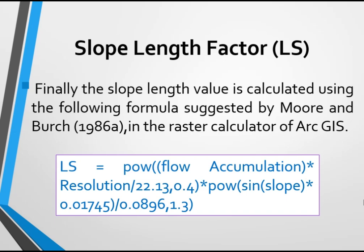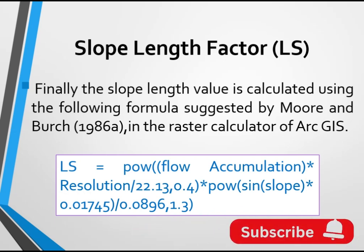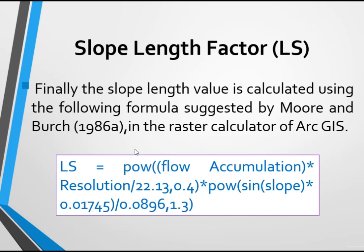Based on the suggestion of Moore and Burch (1986), the slope length factor LS is given by: (flow accumulation × cell size / 22.13) raised to the power of 0.4, multiplied by (sine of slope / 0.0896) raised to the power of 1.3. Using this equation you can determine the LS factor as input for RUSLE.